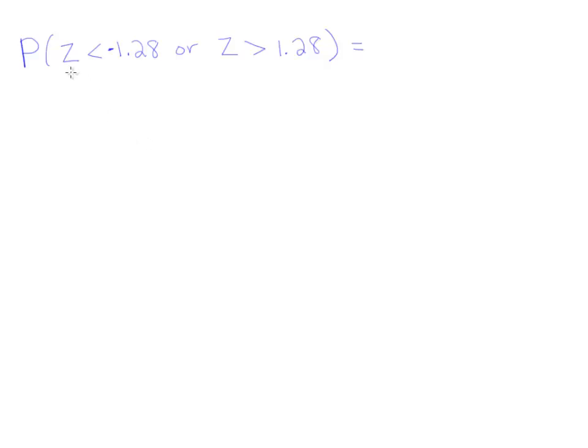In this video we're looking to find the probability that z is less than negative 1.28 or z is greater than positive 1.28. Let's draw a bell curve because the z random variable is going to have a standard normal distribution.